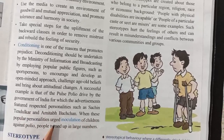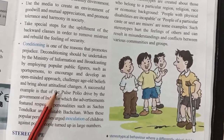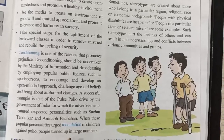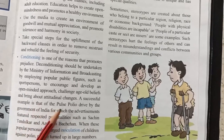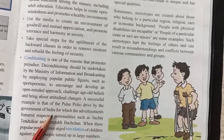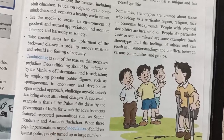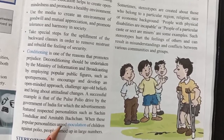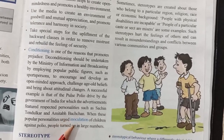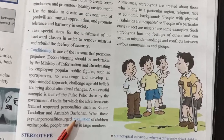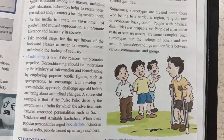A successful example is that of the Pulse Polio drive by the Government of India, for which the advertisements featured respected personalities such as Sachin Tendulkar and Amitabh Bachchan. When these popular personalities urged inoculation of children against polio, people turned up in large numbers. The Pulse Polio drive was a vaccination campaign for young children so the disease of polio would not occur. When respected personalities advertised it and said you need to vaccinate your children and protect them against polio, people came and got involved. So similarly, we can use such approaches to reduce prejudice.